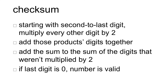Now that we have a credit card number from the user, we need to calculate the checksum. Credit card checksums are calculated as follows: starting from the second to last digit, we multiply every other digit by 2, then we add those products' digits together. From that, we add the sum of the digits that weren't multiplied by 2 to that previous sum. Finally, if that number ends in 0, then the number is valid.